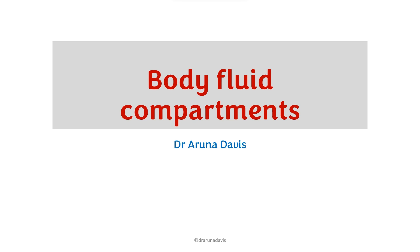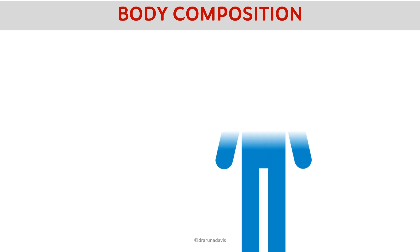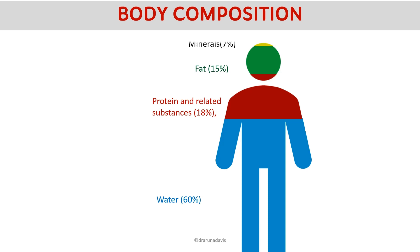This is a short video on the topic of body fluid compartments covering the must-know points. The average adult contains around 60% body weight composed of water, the rest being 18% protein and related substances, 15% fat, and 7% minerals. We need to know how this water is divided in the human body.